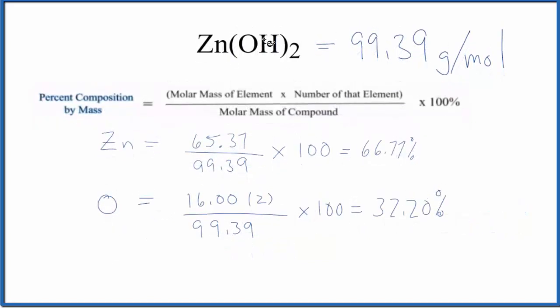Finally for the hydrogen, we take the atomic mass for hydrogen. There are two hydrogen atoms so we multiply that by 2, we divide by 99.39, multiply by 100 and we get 2.03 percent. These all should add up to close to 100, might not be exact but it should be close. That's the percent composition for each element in Zn(OH)2, zinc hydroxide.